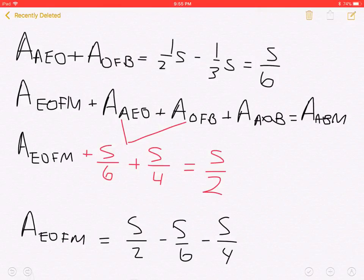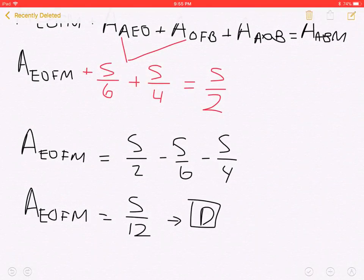Area of EOFM plus area of AEO plus area of OFB plus area of AOB is equal with area of ABM. Area of EOFM plus S over 6 plus S over 4 is equal with S over 2.